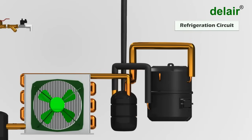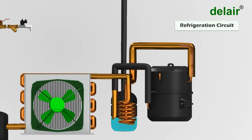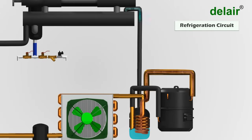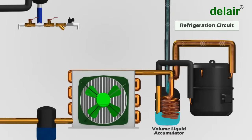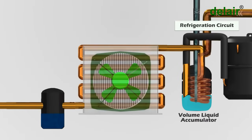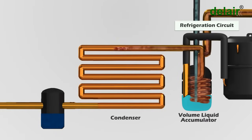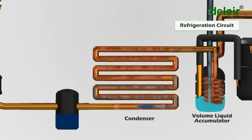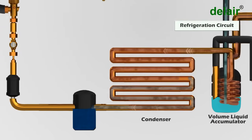In the refrigeration circuit, the compressor pumps refrigerant gas into the volume liquid accumulator where this hot refrigerant gas transfers its heat to cold refrigerant coming in liquid form from the air-to-refrigerant heat exchanger. This high pressure and high temperature refrigerant goes into a condenser — either air cooled or water cooled — which transfers heat from the refrigerant gas to the ambient air or cooling water as the gas condenses into a liquid, collected into a liquid receiver.